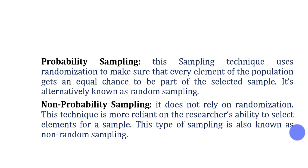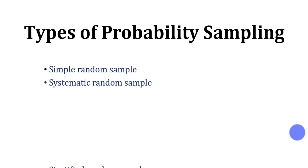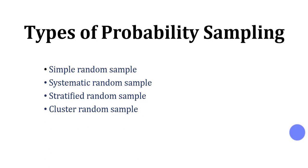One by one, we will discuss techniques categorized under probability sampling and non-probability sampling. Let's discuss probability sampling types first. There are four main types: simple random sampling, systematic random sampling, stratified random sampling, and cluster random sampling. We will elaborate what each of these techniques is all about.